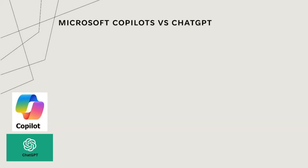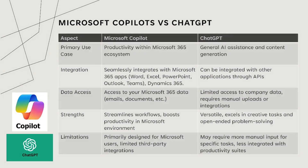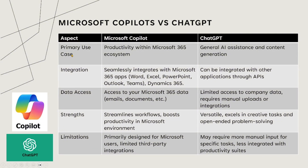What is the difference between Co-Pilot and ChatGPT? Let's start with the primary use case. Co-Pilot is a productivity tool within Microsoft 365. It is similar to ChatGPT but more integrated with Microsoft 365 applications. ChatGPT is a very generic AI assistant for content generation and image generation.